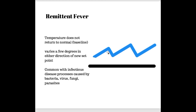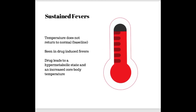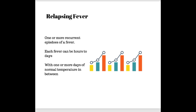Remittent fever is common with infectious diseases caused by bacteria, virus, fungi, and parasites. The third pattern is a sustained fever, where the temperature does not return to baseline — commonly seen in drug-induced fevers leading to a hypermetabolic state, where cells are all in hyperdrive producing more heat and increasing core body temperature. Last is the relapsing fever, where one or more recurrent episodes of fever occur. Each fever episode can last hours to days, but importantly, there are one or more fever-free days between episodes — then a spike, back down, and another spike.